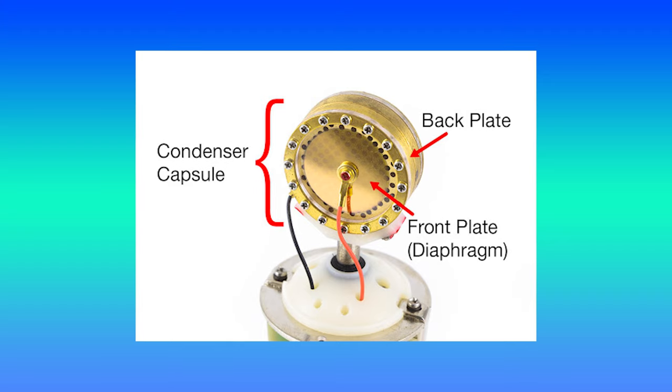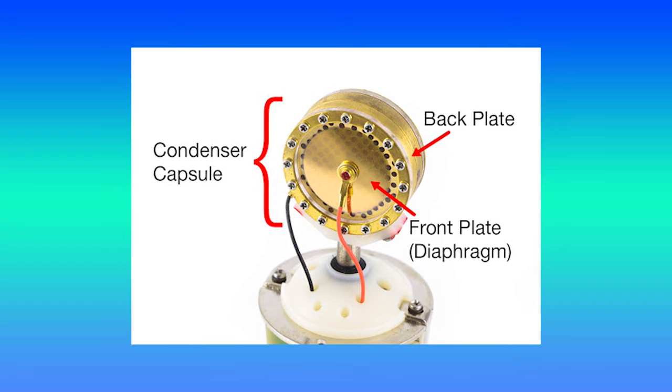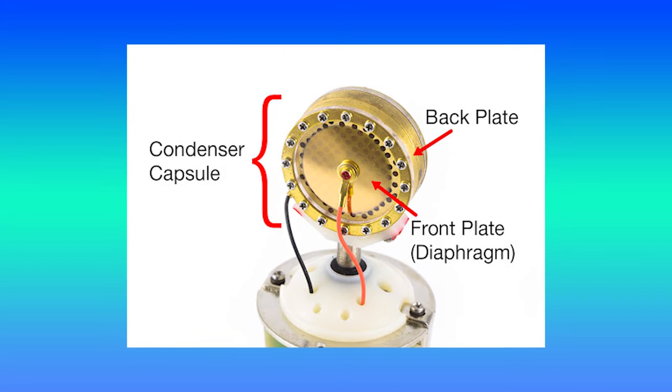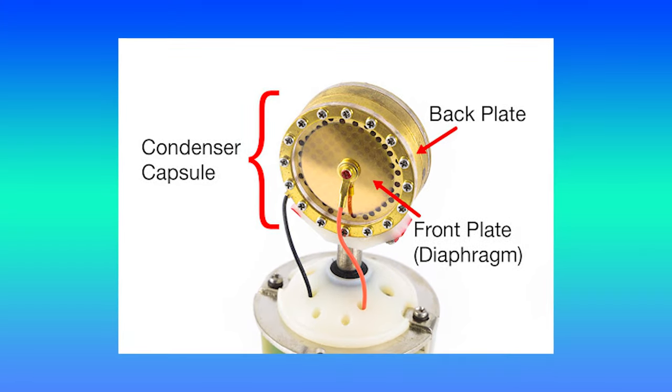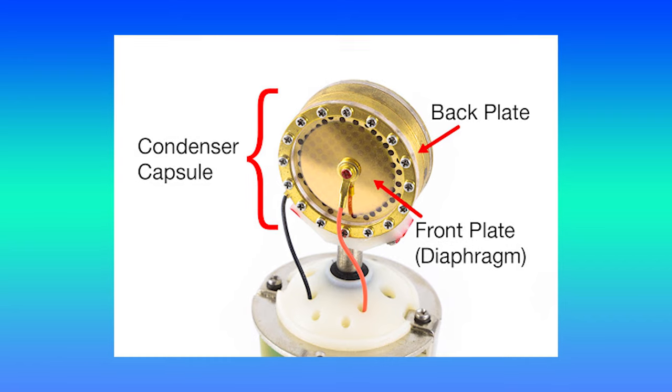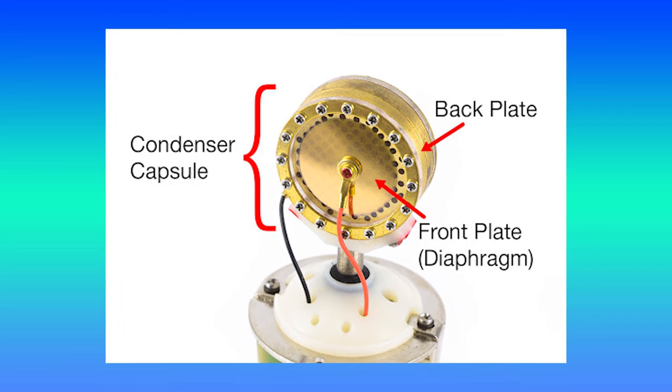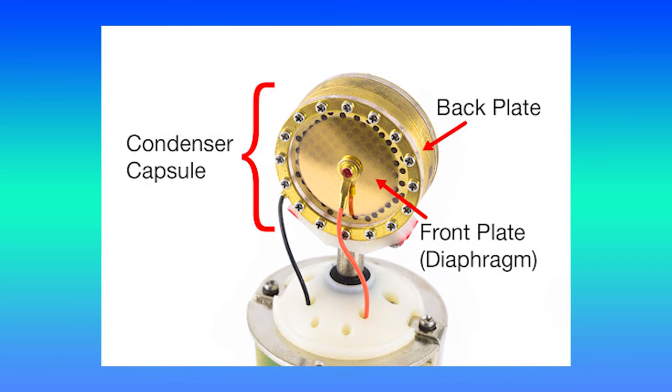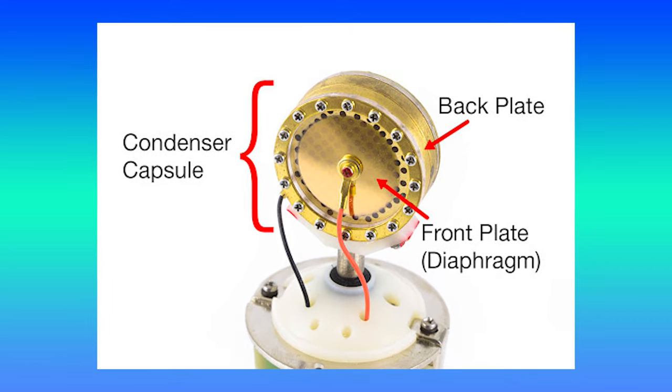In 1916, Western Electric developed the condenser microphone, which was the next breakthrough in recording technology. This microphone worked by having a diaphragm act as a capacitor plate, which sound waves vibrated, converting the signal into electrical charges. This design was superior to the carbon microphone design, and versions of it are still used today.